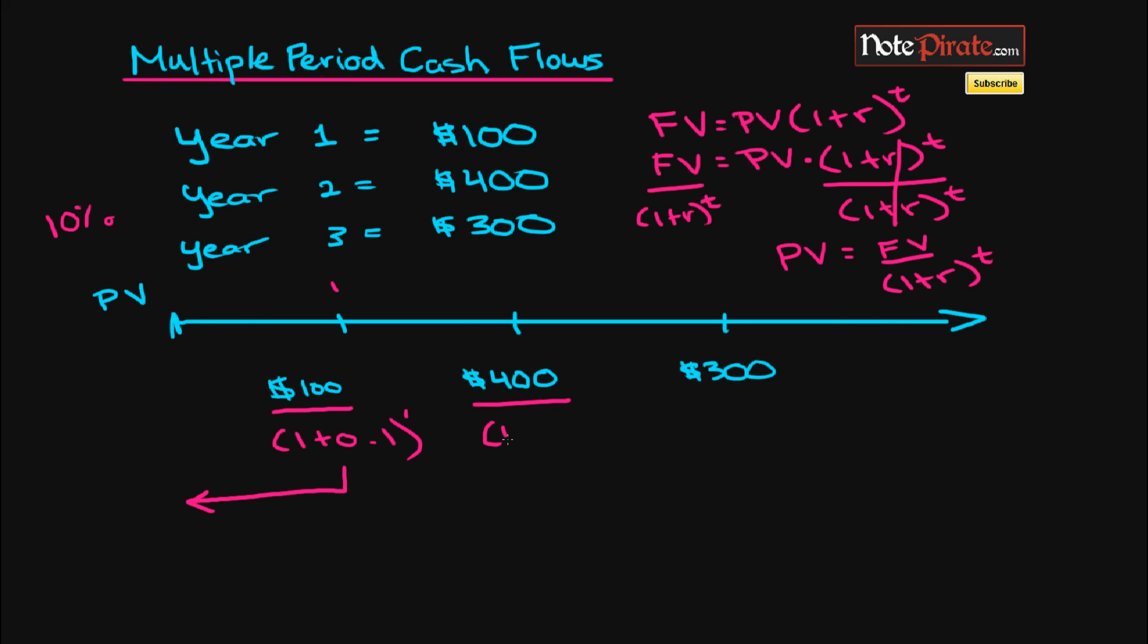The second one is going to be 1 + 0.1, but we're going to have to discount it back two years, so it's to the power of two. And the third one, you can kind of guess what's going to happen—it's going to be to the power of three since we're discounting it back three years.